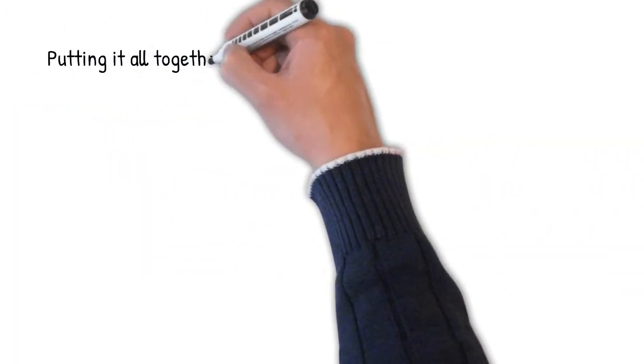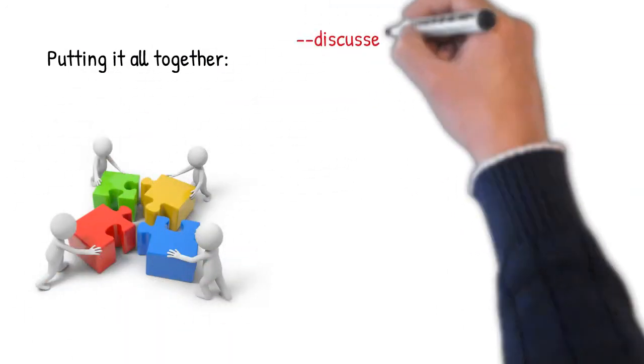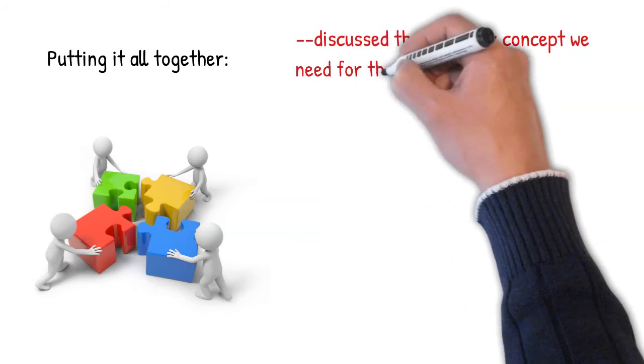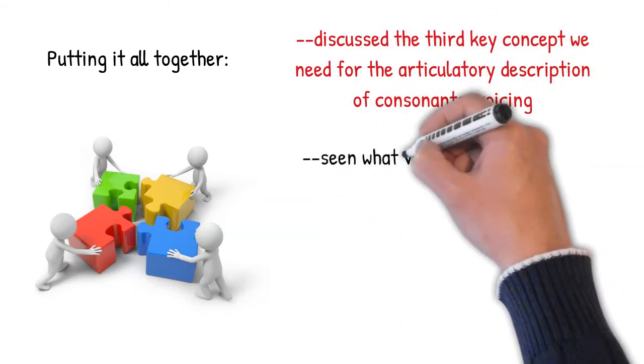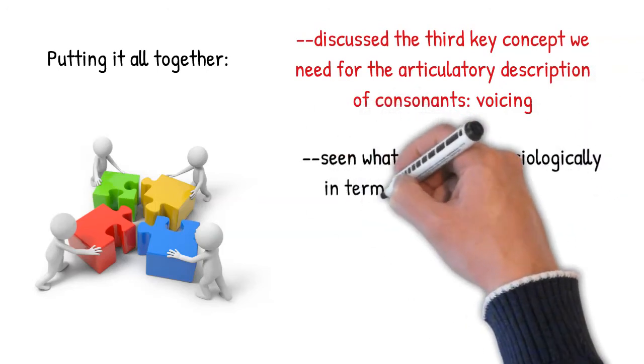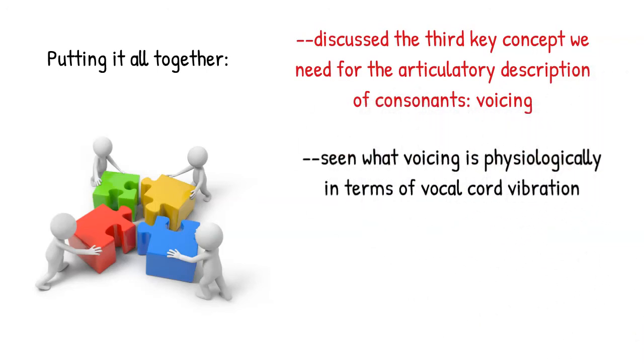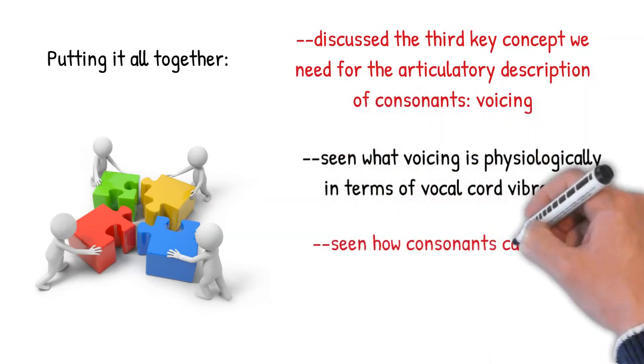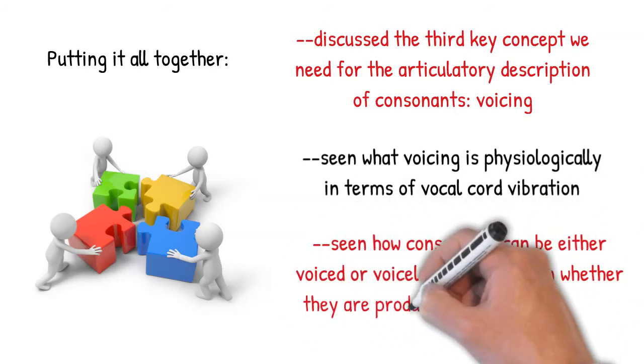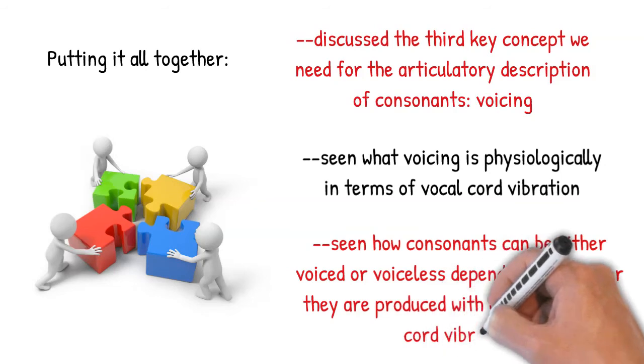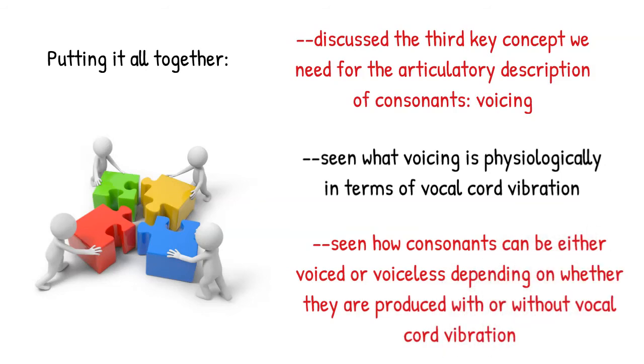Okay, so let's put everything together and review what we've done. We've discussed the third key concept that we need for the articulatory description of consonants, and that's voicing. We've looked at what voicing is physiologically in terms of vocal cord vibration, and we've seen how consonants can be either voiced or voiceless, depending on whether they're produced with or without, you guessed it, vocal cord vibration.